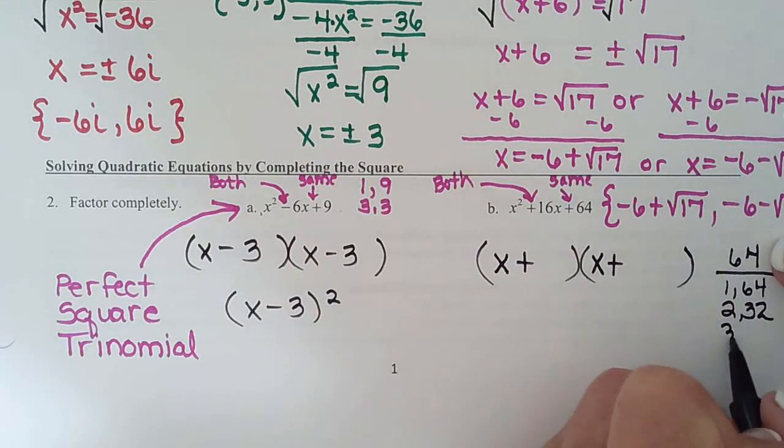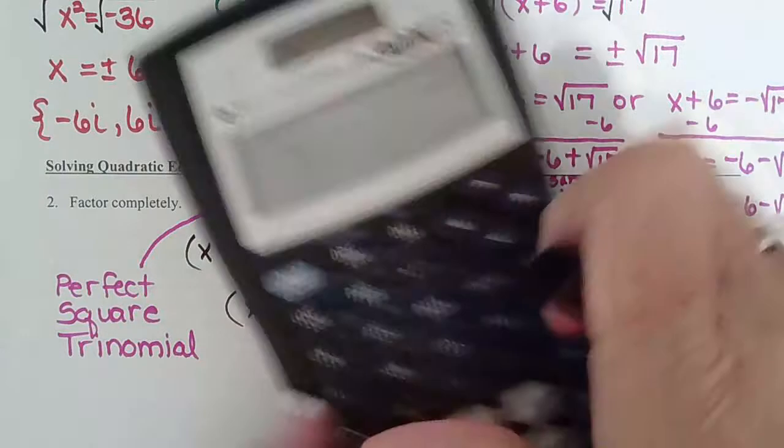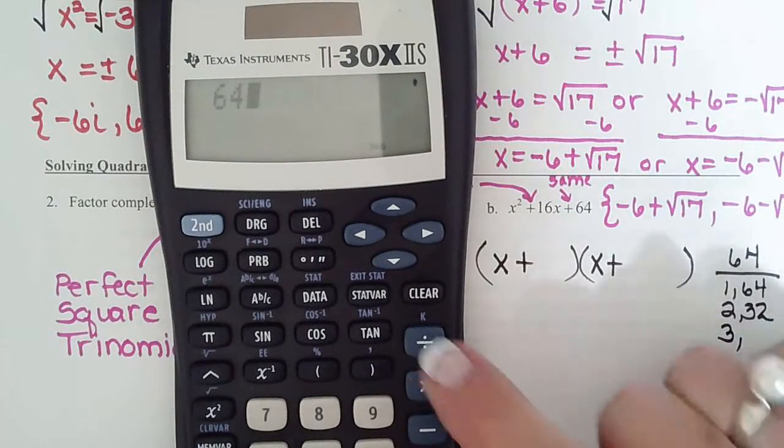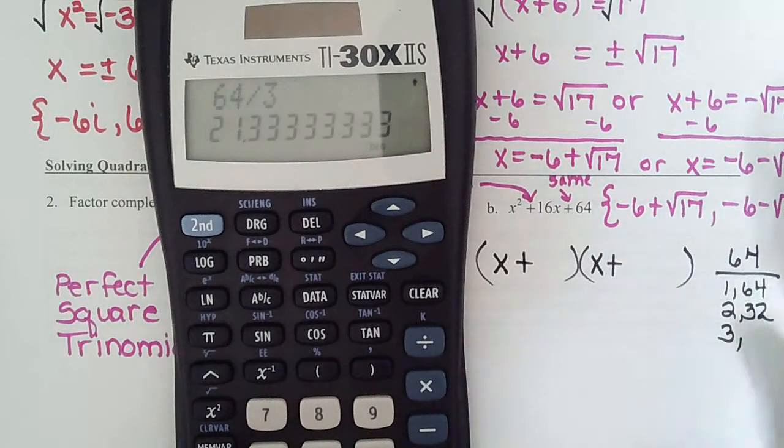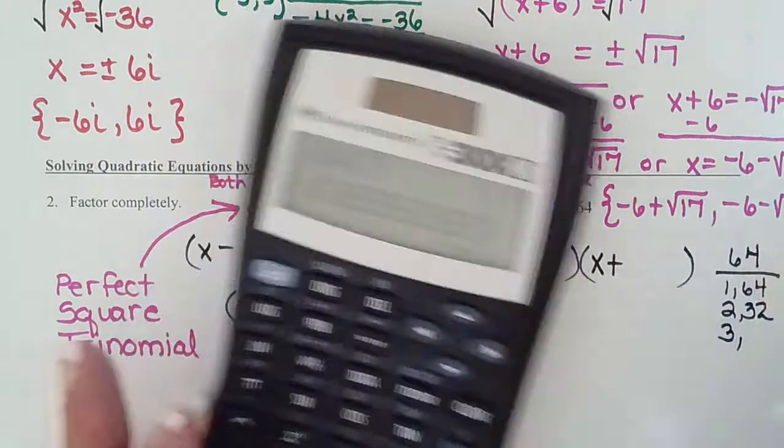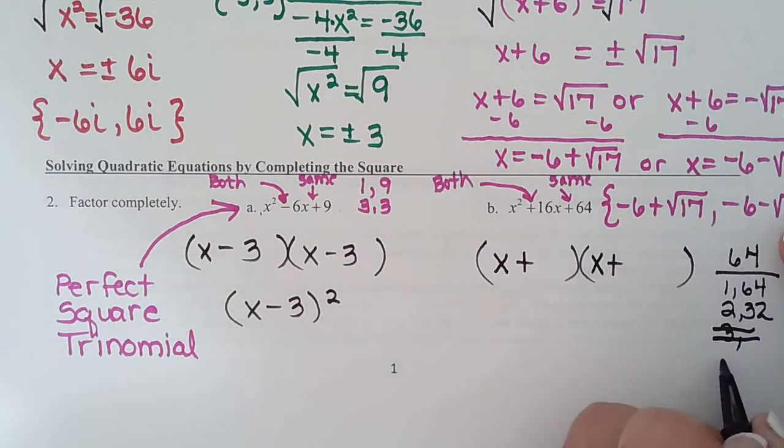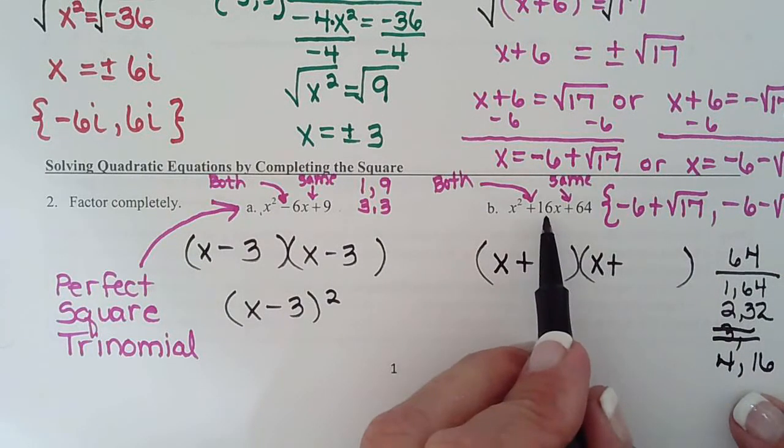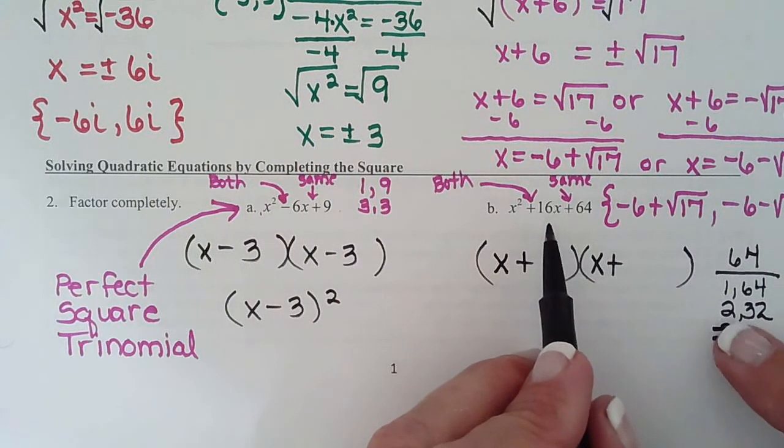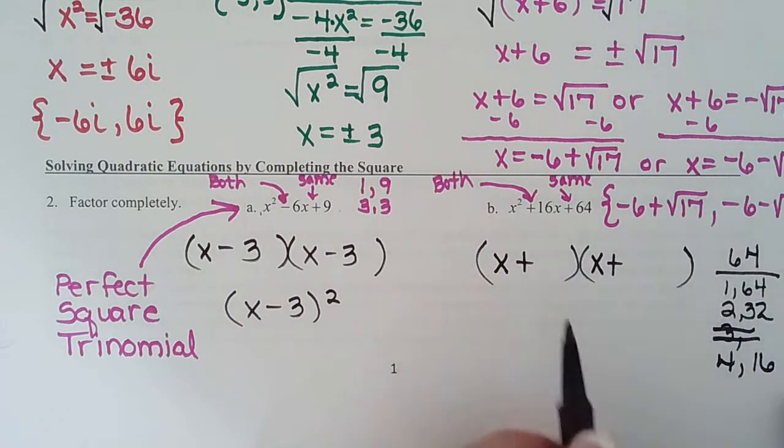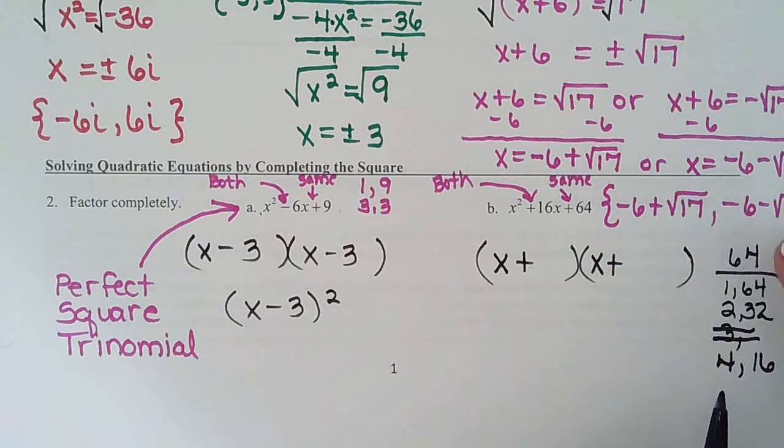So x plus, x plus. We're looking for factors of 64 that add to 16. So 1 and 64, no. 2 and 32, no. We've got the calculator this time. 4 goes in 16 times. Do any of these add to 16 yet? That adds to 20, that adds to 34, that adds to 65. 8 does. Boom.